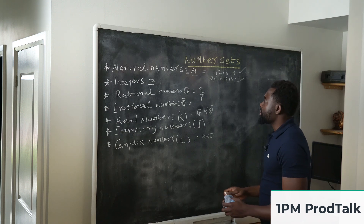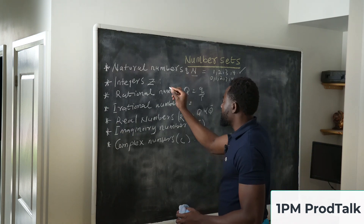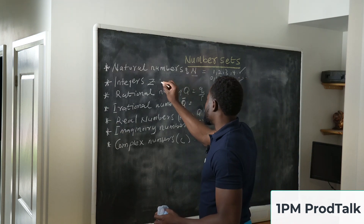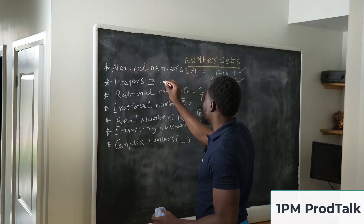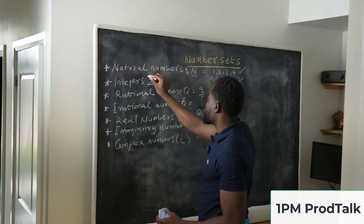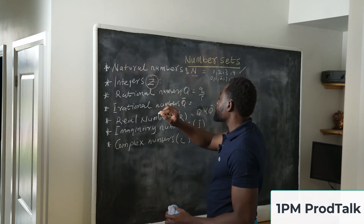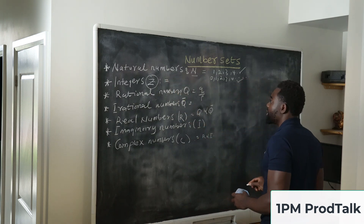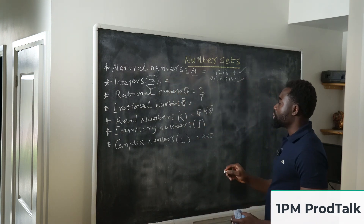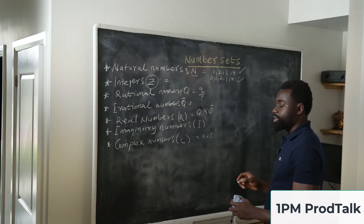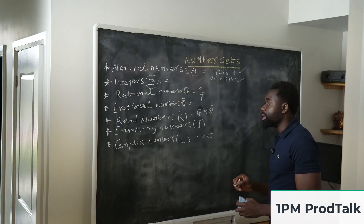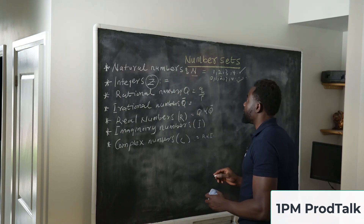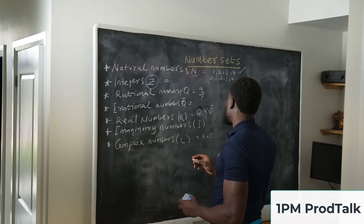The next thing we want to talk about is an integer. The symbol for an integer is Z. An integer is any natural number including negative numbers as well.